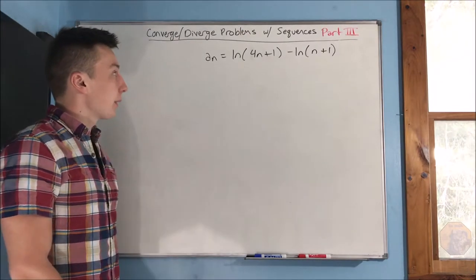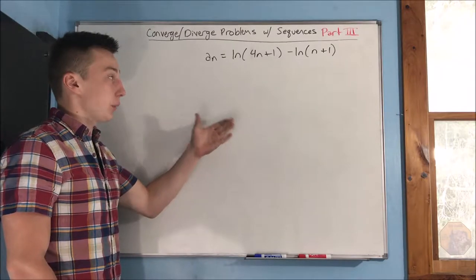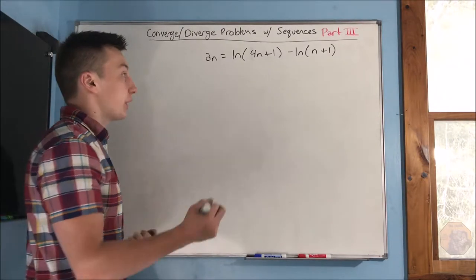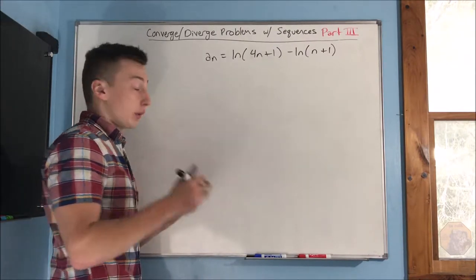We have our first problem up on the board here. We have a_n equals natural log of 4n plus 1 minus natural log of n plus 1. We want to find that limit as n approaches infinity to figure out whether this sequence is going to converge or diverge.